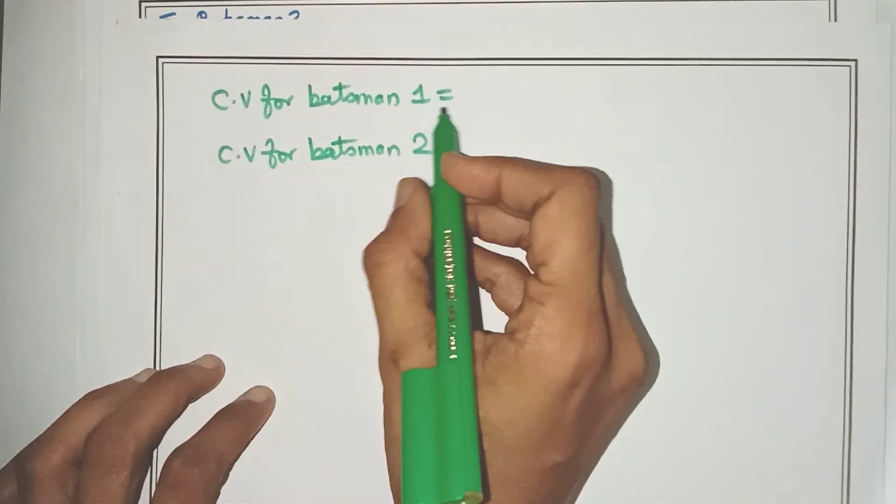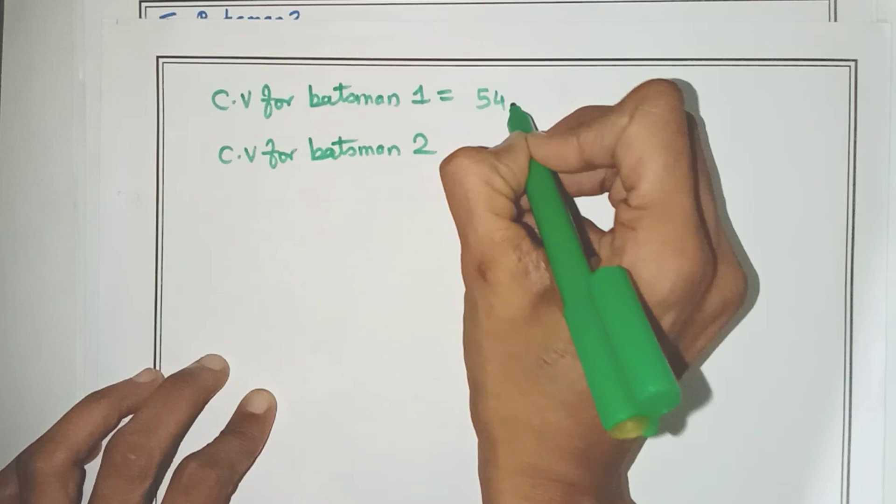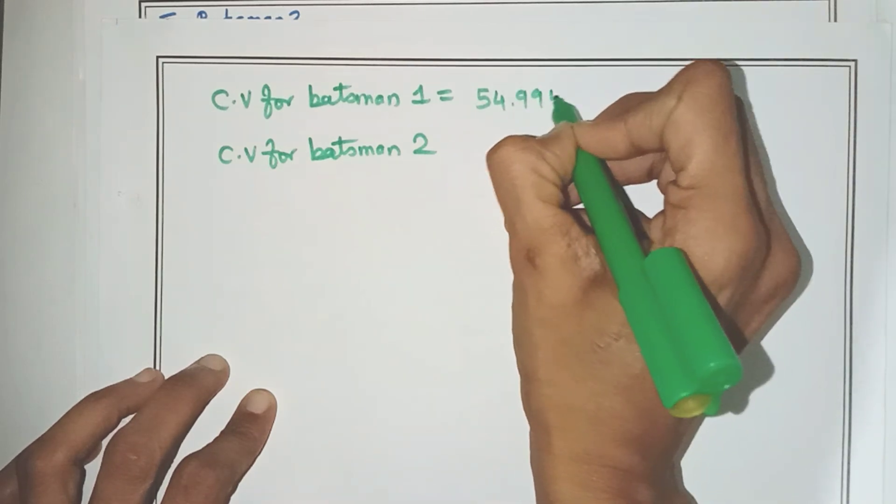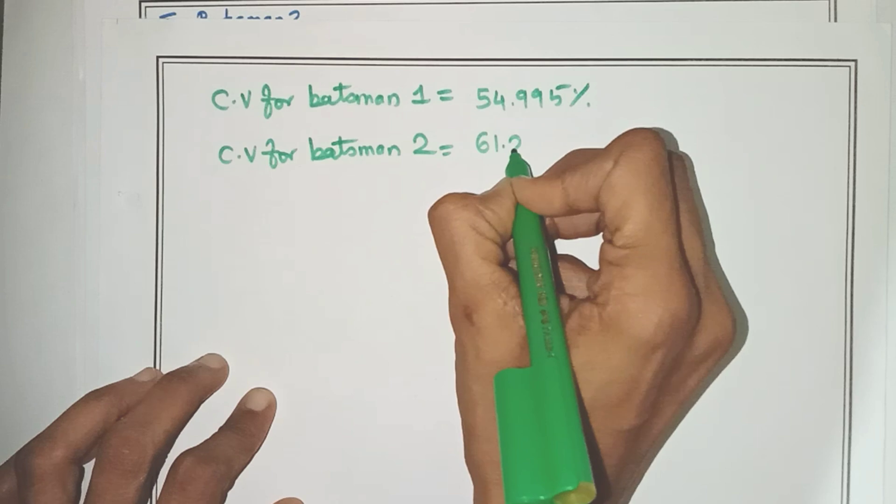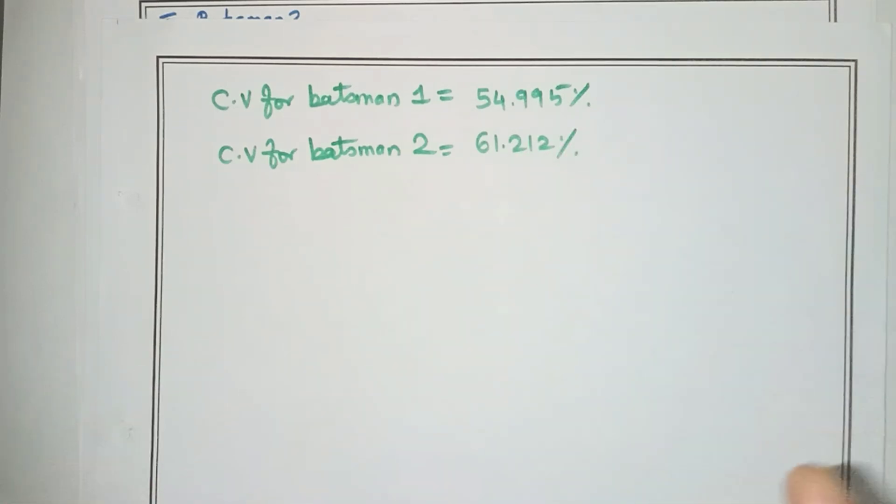What is the CV for the first batsman? Yes, we just now found it as 54.995 percent. CV for batsman 2 is 61.212 percent. Now the question is, which batsman is more consistent?